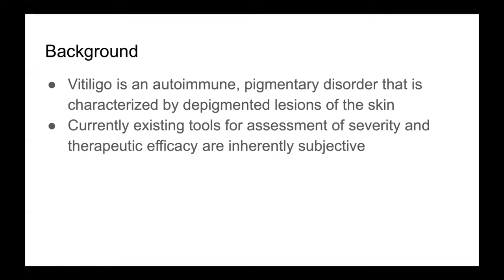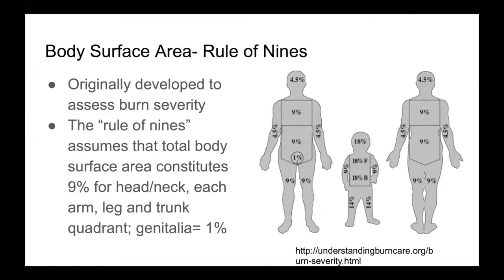The most common existing tools for assessment are inherently subjective. The rule of nines is an assessment tool commonly used to evaluate vitiligo body surface area. This tool was originally developed to assess severity and involvement in burn patients. It assumes that the total body surface area is made up of nine percent for each of the following regions: head and neck, each arm, each leg, and each trunk quadrant, leaving one percent for genitalia.